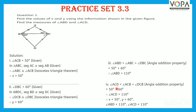Angle ACD is equal to angle ACB plus angle DCB by the angle addition property. Substituting the values — angle ACB as 50 degrees and angle DCB as 60 degrees — angle ACD is equal to 110 degrees. Therefore, X is equal to 50 degrees, Y is equal to 60 degrees, angle ABD is equal to 110 degrees, and angle ACD is equal to 110 degrees.